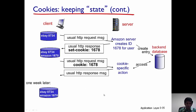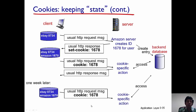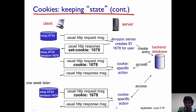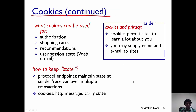One week later, if the client accesses amazon.com again, the same thing happens — it sends the usual HTTP request message along with the cookie. It does not matter how much later the user accesses the site; the cookie information is saved in your computer and is used by the back-end database to retrieve specific information about the user.